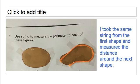We then took that string and wrapped it around shape Y to find the distance around that shape. My daughter right away said, wait a minute, it doesn't fit around shape Y. So right at that moment, we concluded that shape Y must be longer — the distance around that shape must be longer, which means the perimeter is longer in shape Y than shape X.